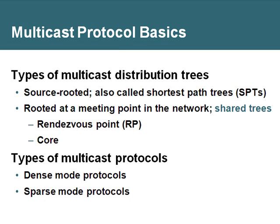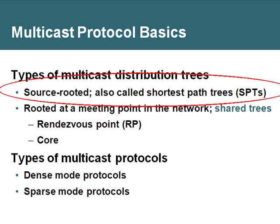The tree means that at some point the traffic is going to branch out so that it can reach all of the required destinations. There are a couple of different types of distribution trees. The first is going to be source-rooted, also called shortest-path trees. This is similar to how a link-state routing protocol finds the shortest path from itself to every other destination on the network. The root of the tree will be at the source of the traffic, and the shortest path to each receiver will be calculated.